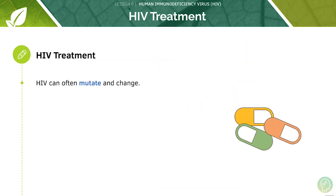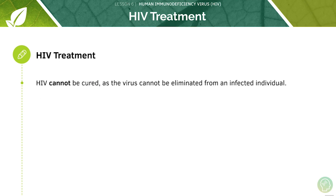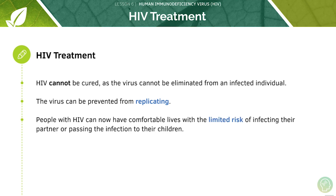HIV can often mutate and change, so a single treatment is usually ineffective. Most patients receive a cocktail mixture of drugs in order to achieve the greatest possible treatment. There is no cure for HIV, but it is treatable — the virus can be prevented from replicating. Therefore, what was once a lethal disease has now become a manageable condition when paired with proper medical advice.